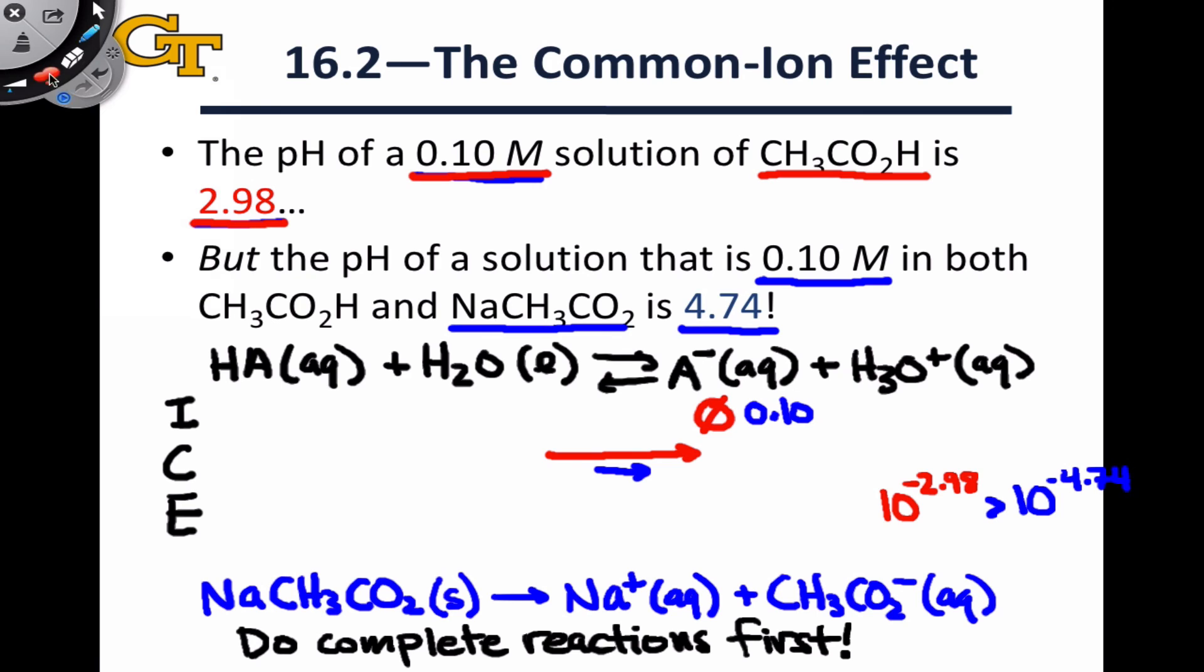And an important take-home message here is that this is basically a matter of Q versus K and Le Chatelier's principle. There's nothing really new in calculating these pHs. We can calculate them using an ice table just like we did in the previous chapter on equilibrium.